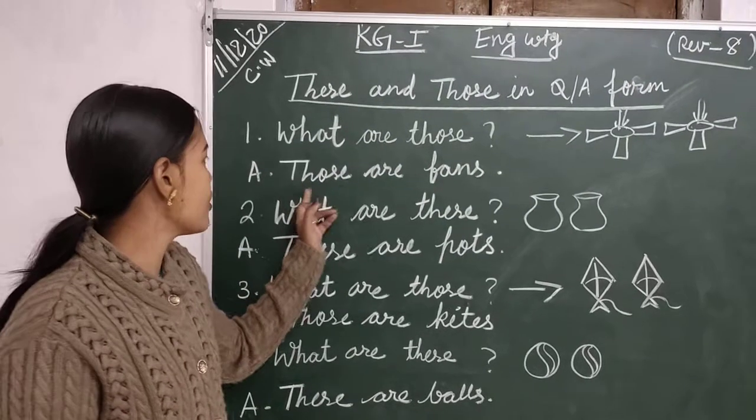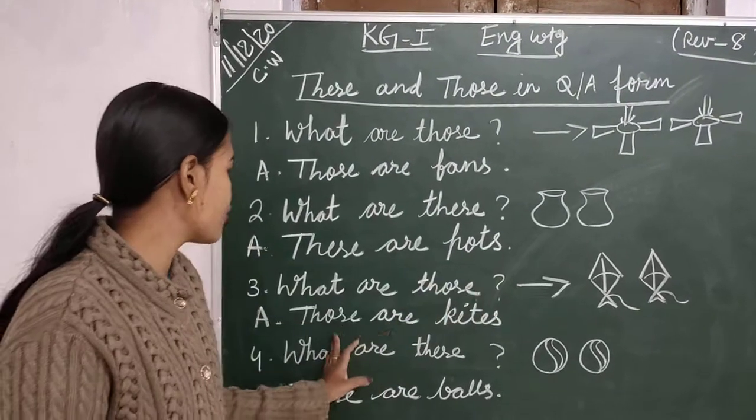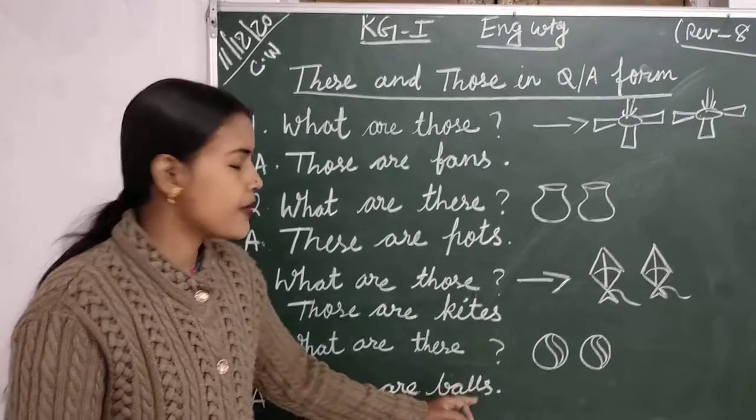Once again repeat. Those are fans. These are pots. Those are kites. These are balls.